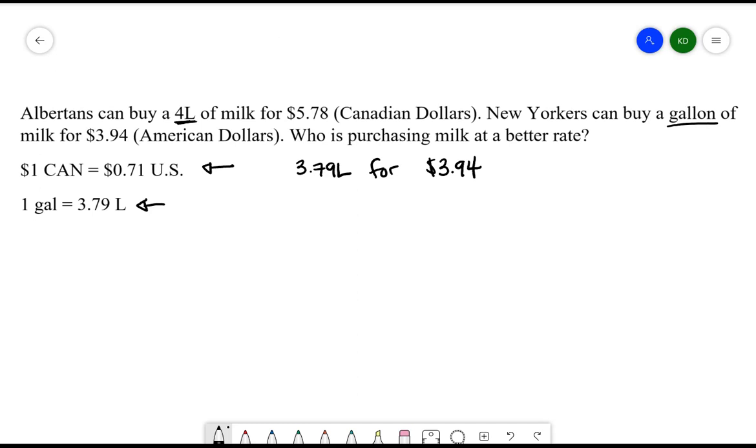So let's set up our conversions. So 3.79 liters will cost $3.94. What we want to know is how much is it going to cost for 4 liters. Let's cross multiply and divide. So here we'll go 3.94 multiplied by 4, and then we'll divide by 3.79.